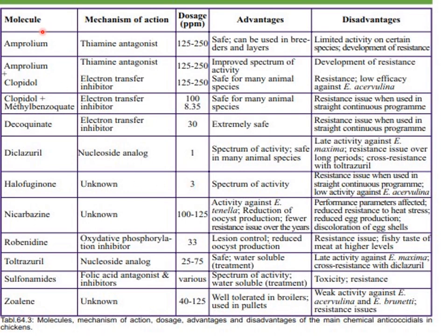A table of anticoccidials lists some examples with mechanism of action and dosage, advantages and disadvantages: amprolium, clopidol, and decoquinate; diclazuril and halofuginone. Mechanisms of action include thiamine antagonist, electron transfer inhibitor, and nucleotide analog, with respective advantages and disadvantages noted.